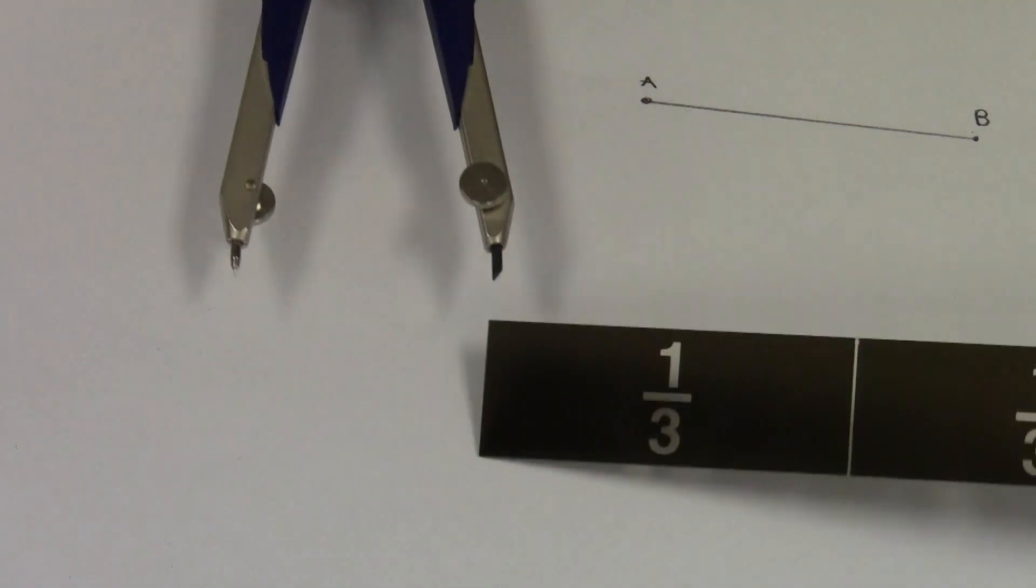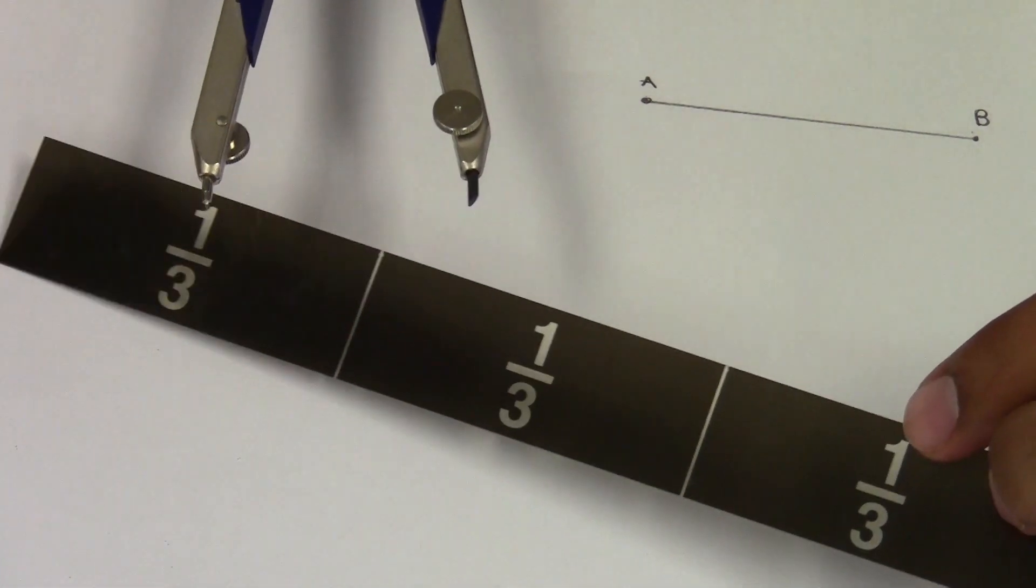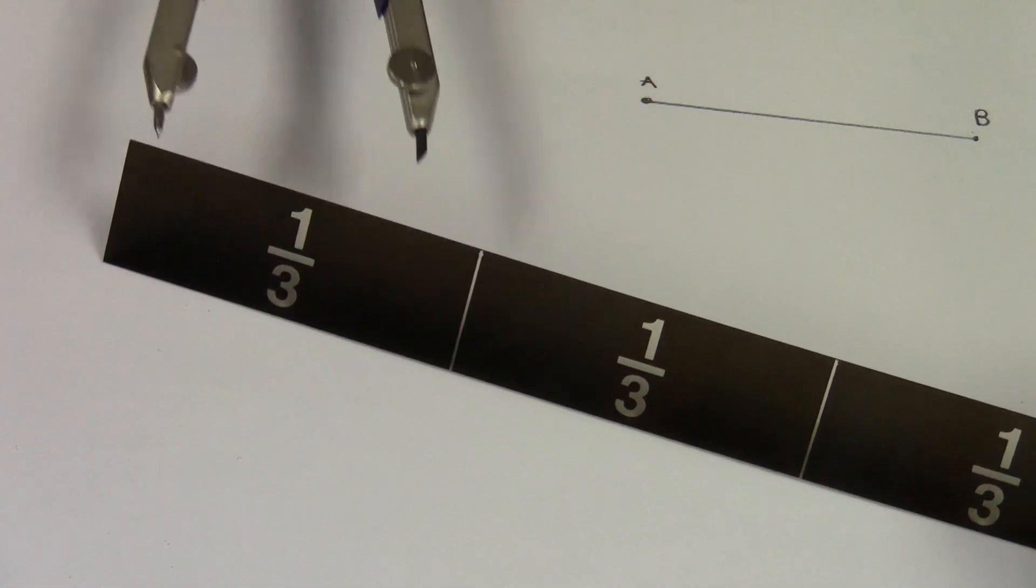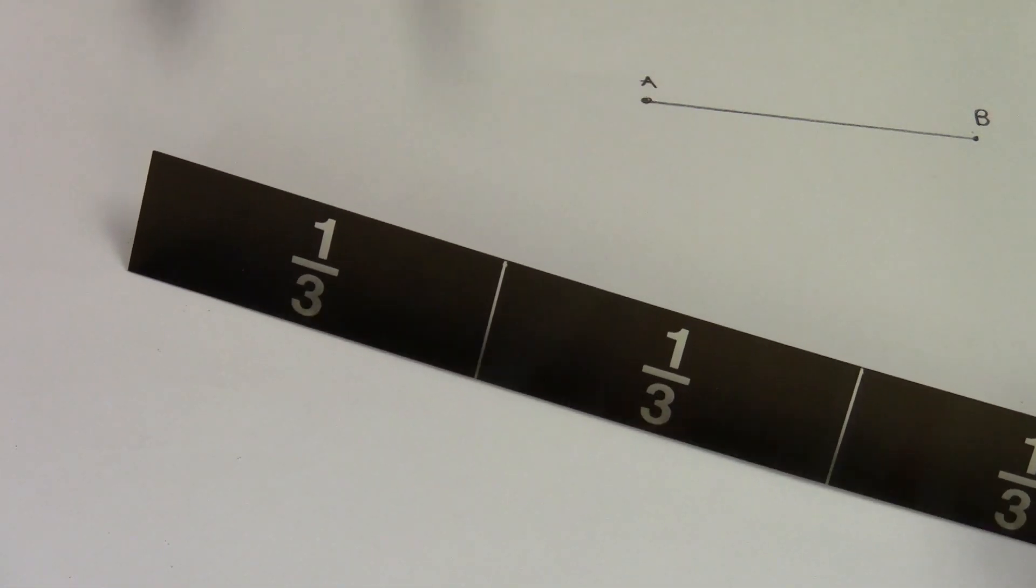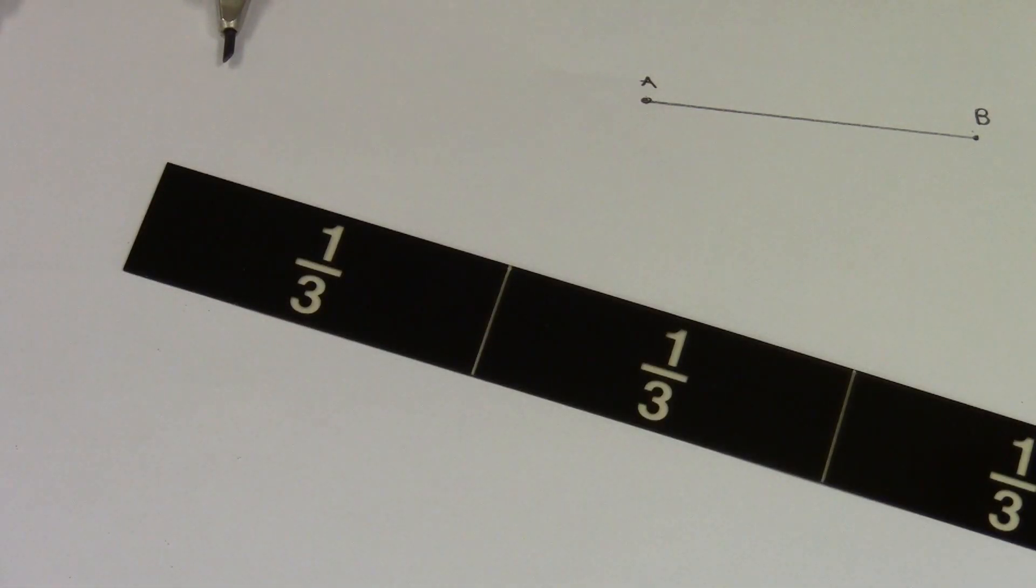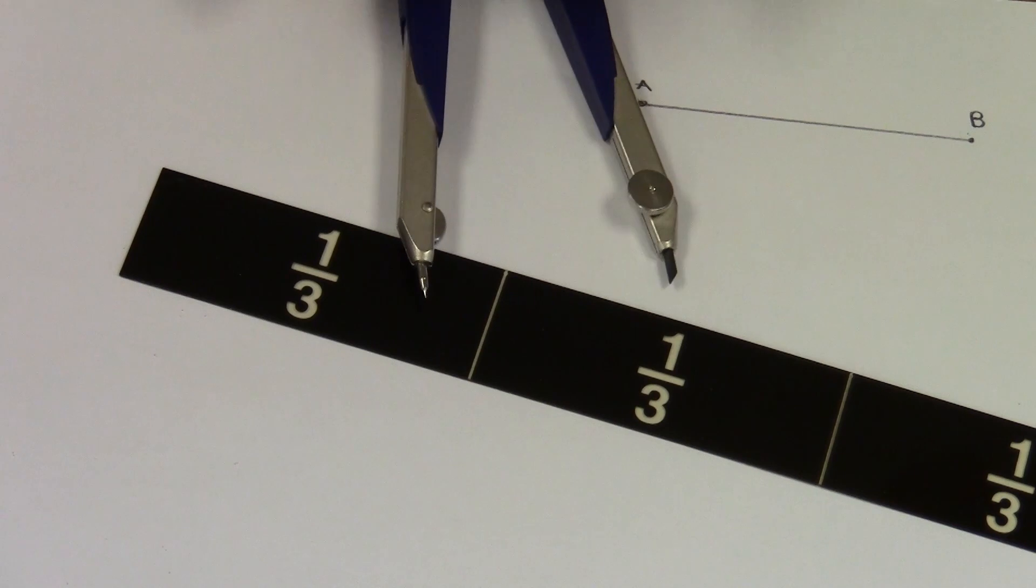All right, so you want to duplicate this line segment and you'll be doing this without a ruler. You'll need your compass and a straight edge. This is kind of ghetto - I'm using a fraction bar, an old-school fraction bar for projectors, but it's a straight edge. Notice that I'm not using a ruler to actually measure the exact length. We'll just be using our geometry tools.